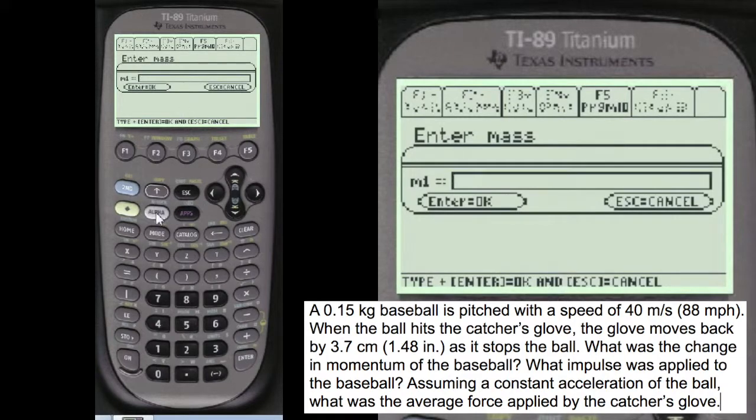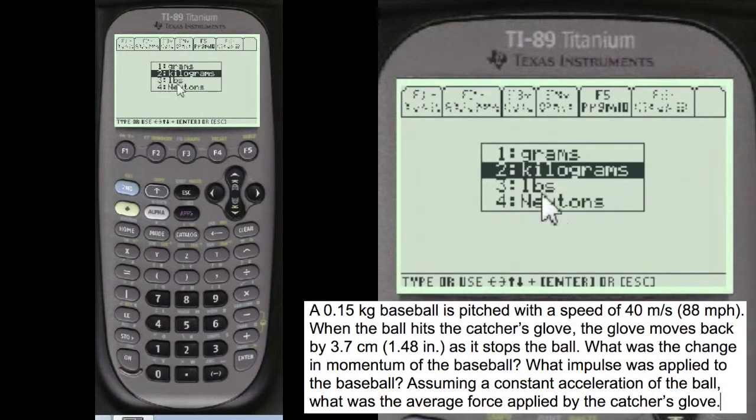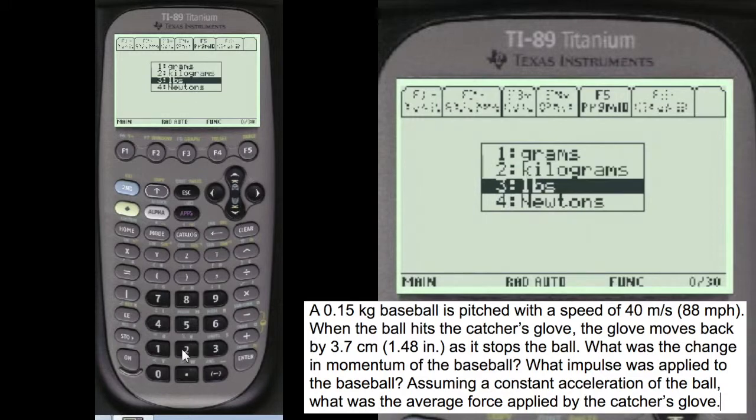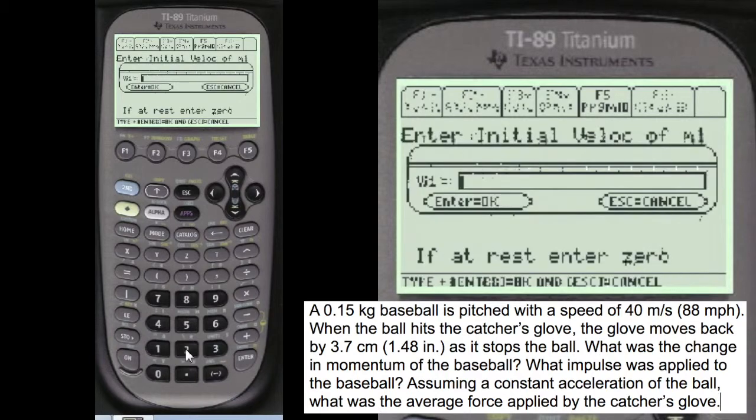We're going to enter the mass. Now to do that, we're going to have to press alpha before you enter anything in these entry lines here in the way my program works. So alpha 0.15. Since conversions are a big deal in physics, I always give you the chance to, in case they give you grams or pounds or newtons. In this case, kilograms. So we're going to choose number 2. I like to use the numbers in front of these instead of, you can scroll down to them and click on enter. Or you can use the number before what your choice is. I'm going to choose number 2.